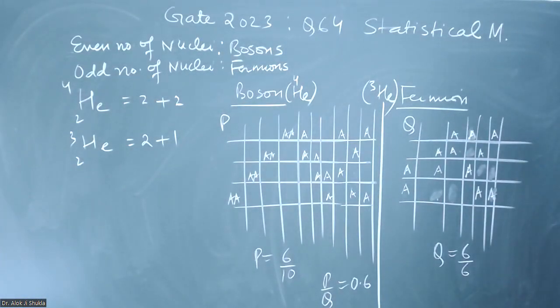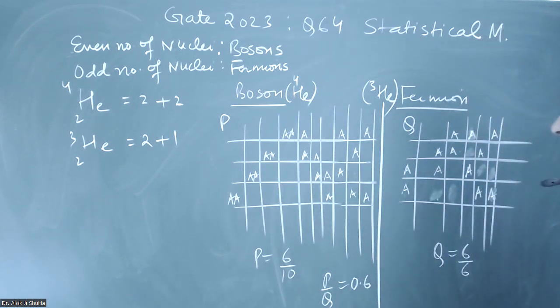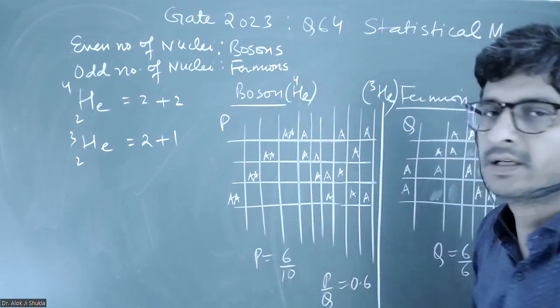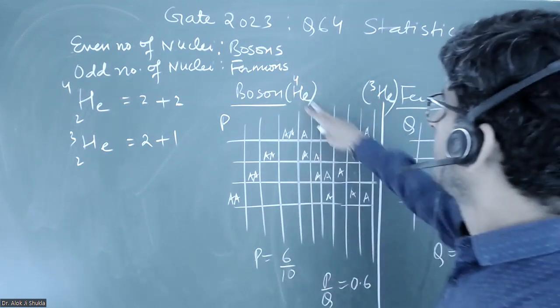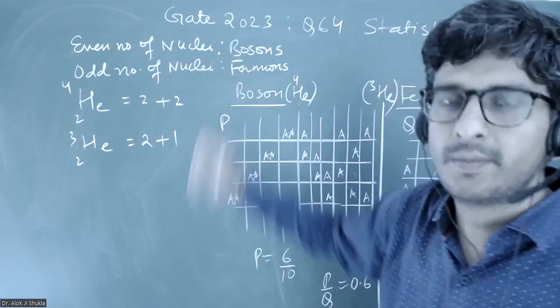This is question number 64 from GATE 2023 from statistical mechanics, in which helium-4 and helium-3 both are given. You know that in helium-4 you will have even number of nuclei, so it will be a boson.